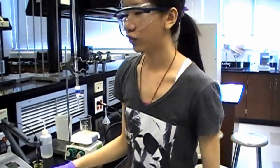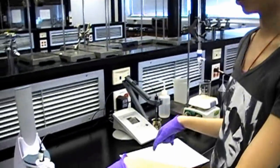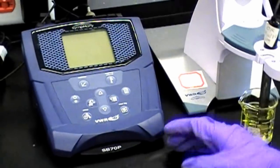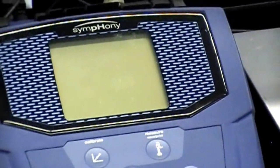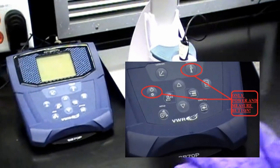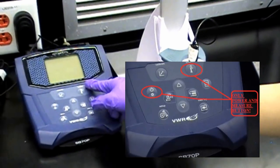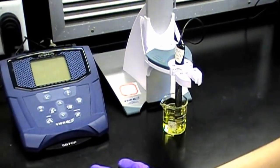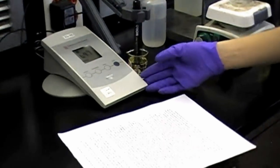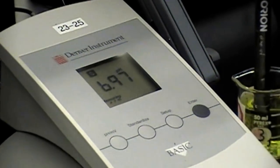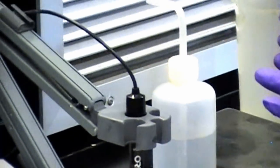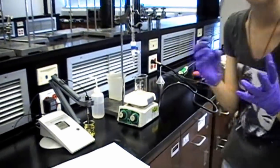We have two different pH monitors. In this one, you have to hit the measure button and the power button. Those are the only two buttons you'll be dealing with. You don't want to hit anything else or it won't be calibrated. But for this one, it constantly measures your pH, so all you have to do is clean your pH probe with deionized water and kim wipes.